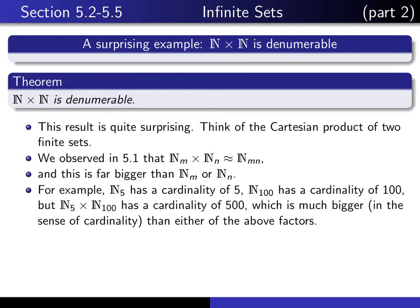Just to give you an example, n sub 5 denotes the set of natural numbers from 1 to 5, so that has cardinality 5. n sub 100, the natural numbers from 1 to 100, has a cardinality of 100. But when you take the Cartesian product, according to this result, that is equivalent to the set n sub 5 times 100, or 500.